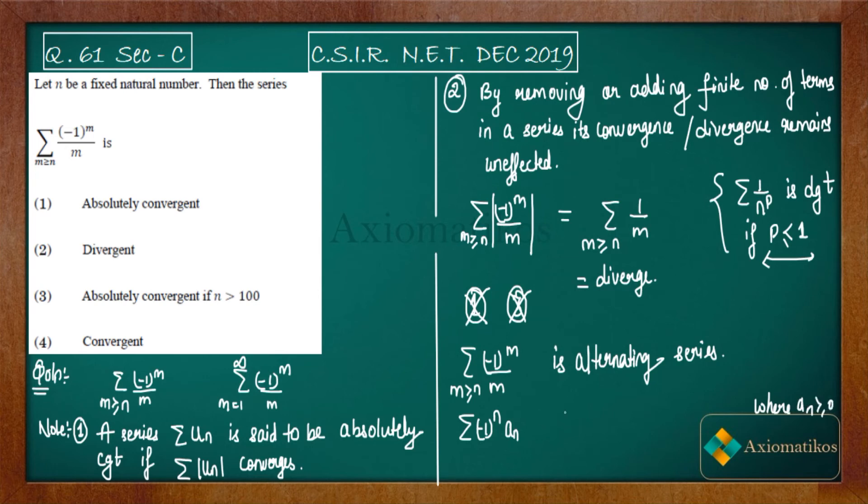If you have a series like this and limit as n goes to infinity of a_n is zero, and a_n is monotonically decreasing—if these two conditions happen with your series, then this will result in ∑(-1)^n a_n converging.